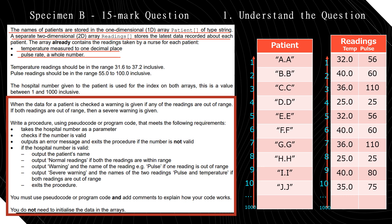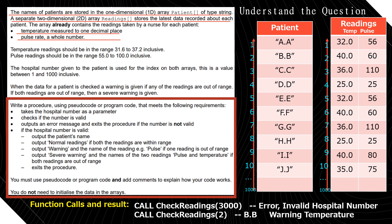You must use pseudocode or program code and add comments to explain how your code works. You do not need to initialize the data in the arrays. At the bottom, we have two examples of function calls and their expected output. If we call the procedure check_readings with parameter 3000, the output should be 'error: invalid hospital number'. If we call it with parameter 2, it sees there's a higher temperature and outputs 'warning: temperature'.